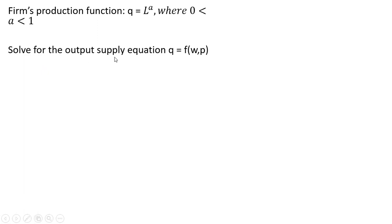So we want to solve for the output supply equation, where the firm's output is a function of the wage and the price it sells its product for. It's going to be a perfectly competitive firm, so P will be given for the firm.